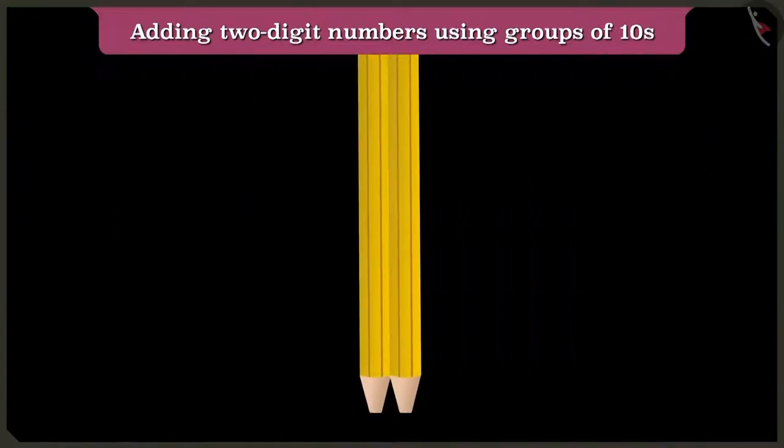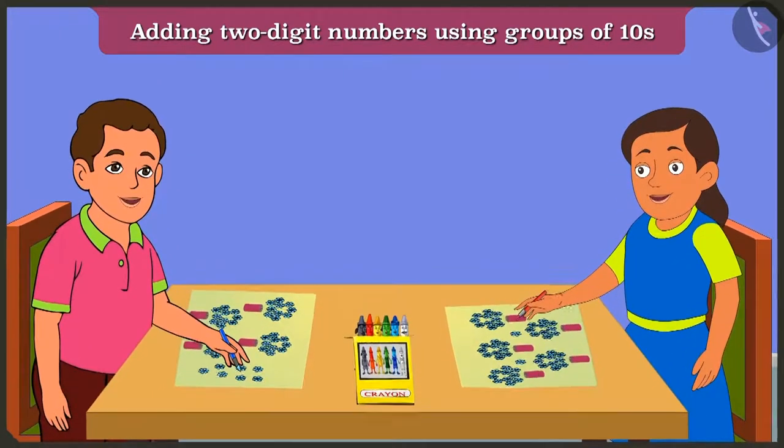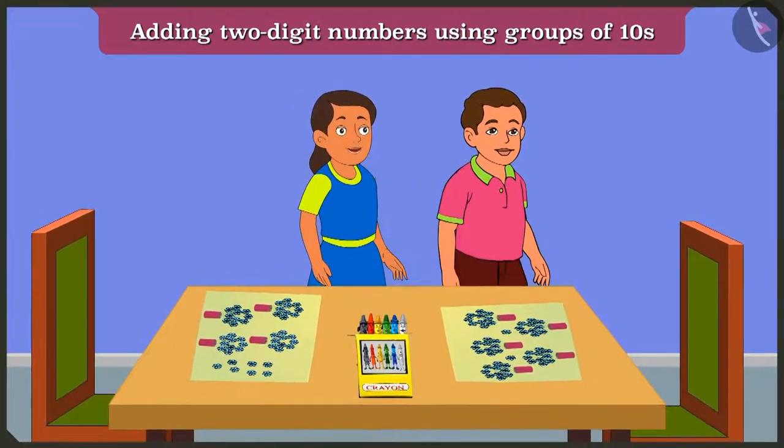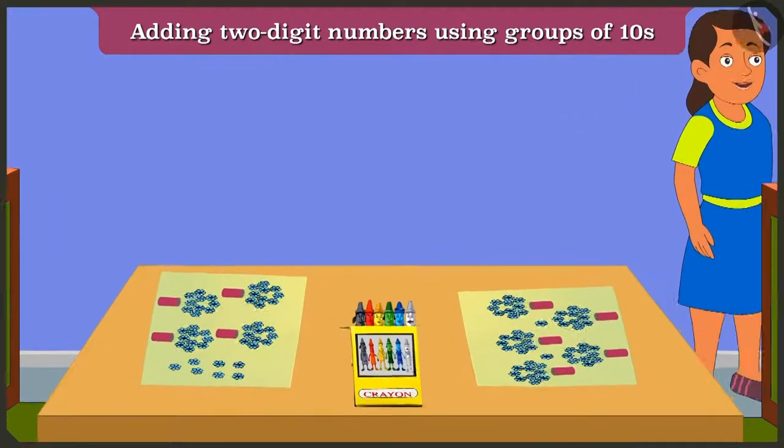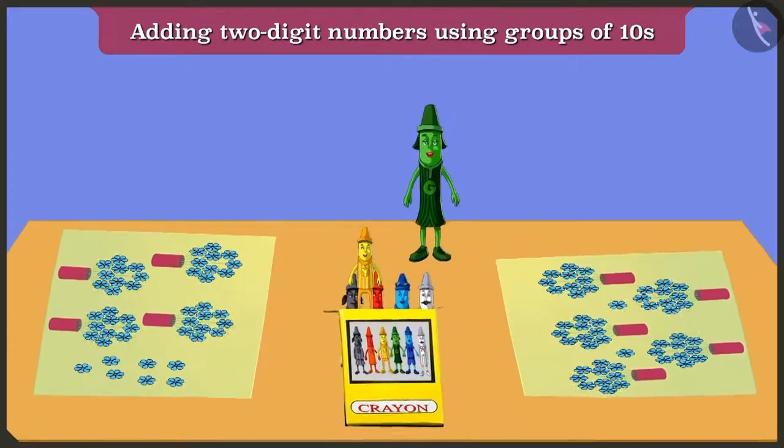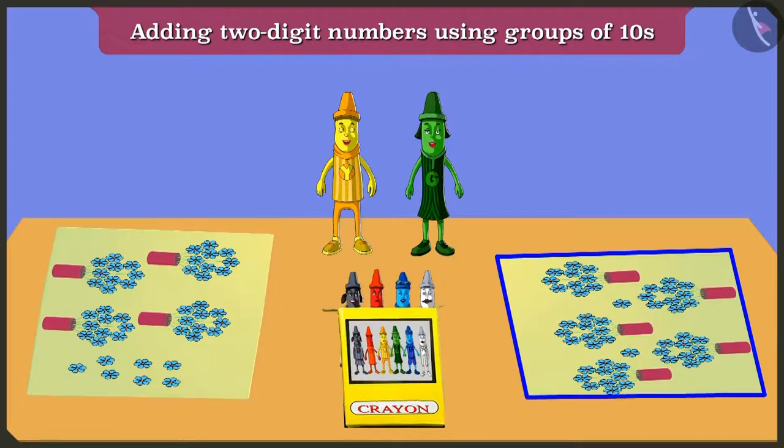Look, Bunty and Bubbly are drawing pictures. Hmm, looks like they are going to the park to play. Hey, what's this? The green crayon and the yellow crayon are looking at the pictures made by Bunty and Bubbly. Let us hear what they are talking about.